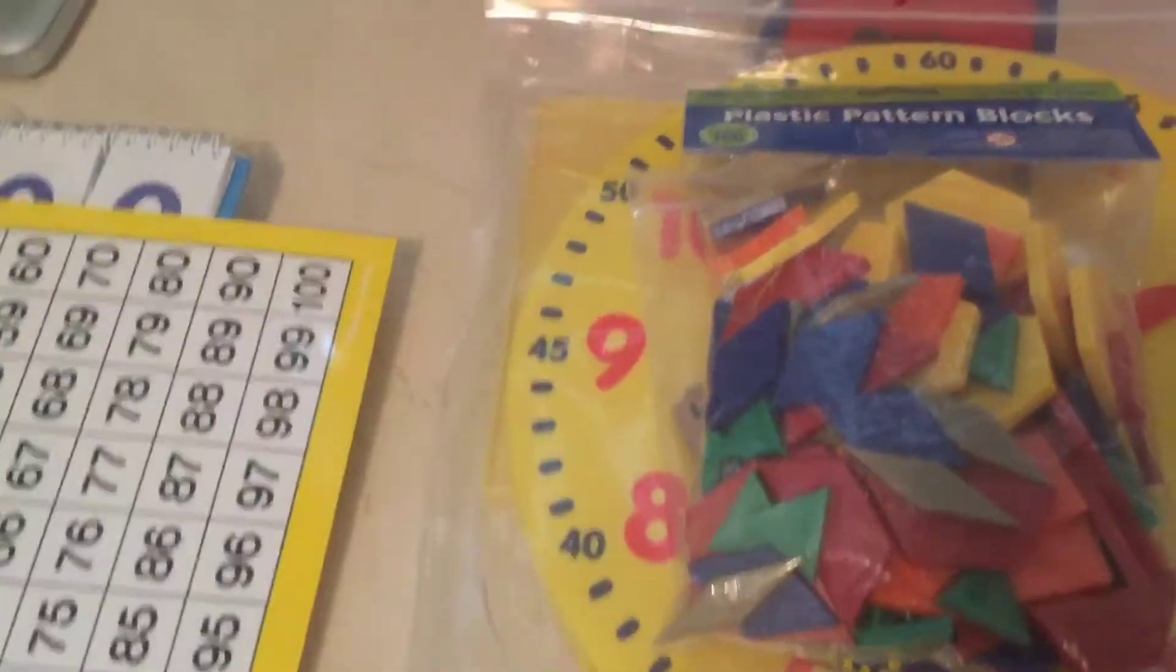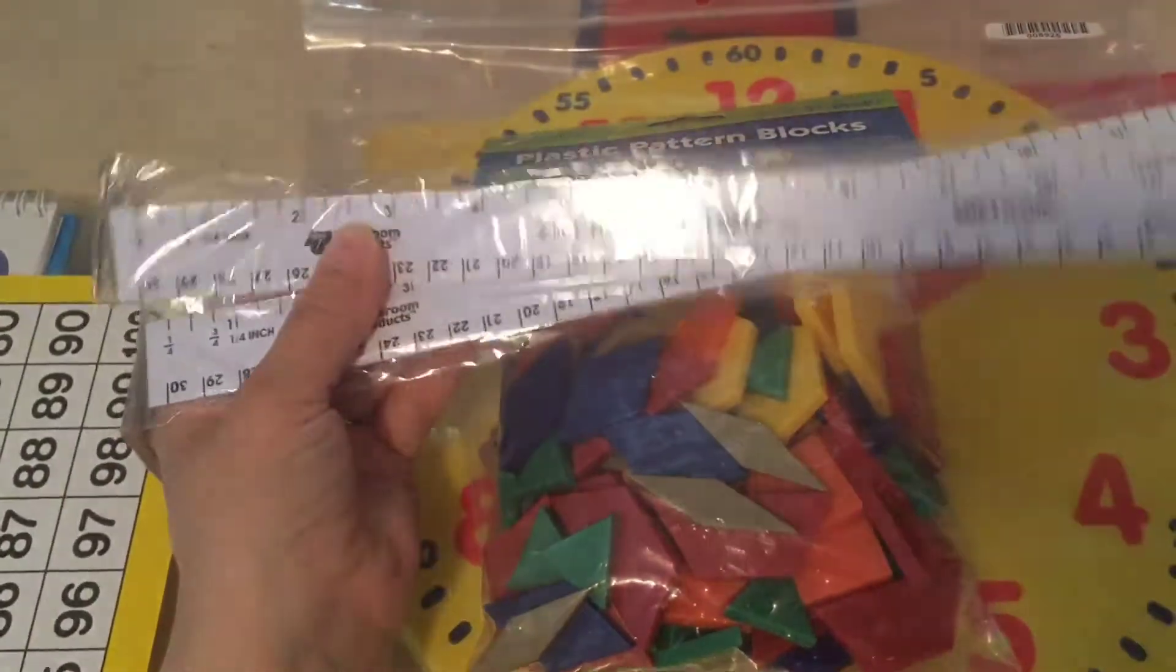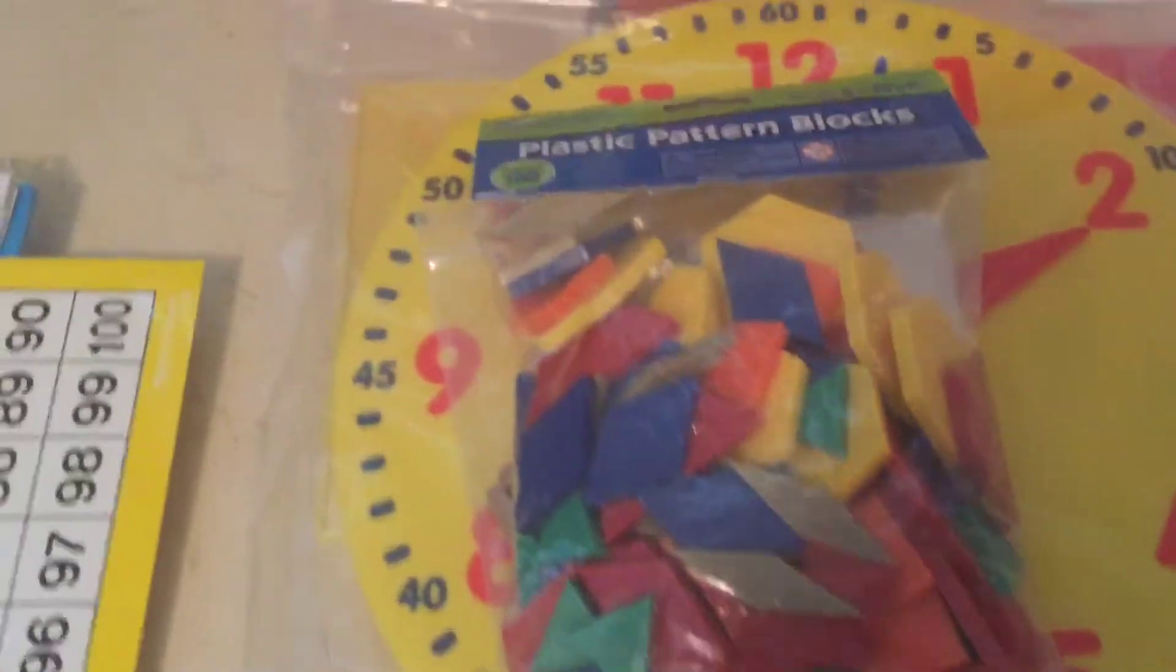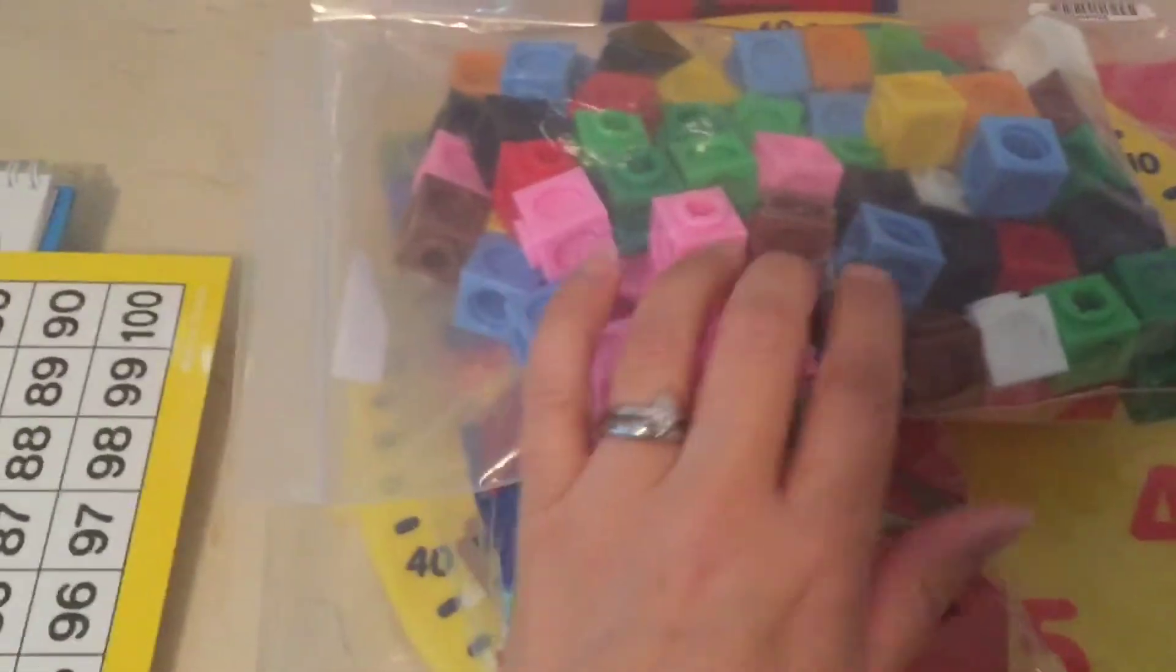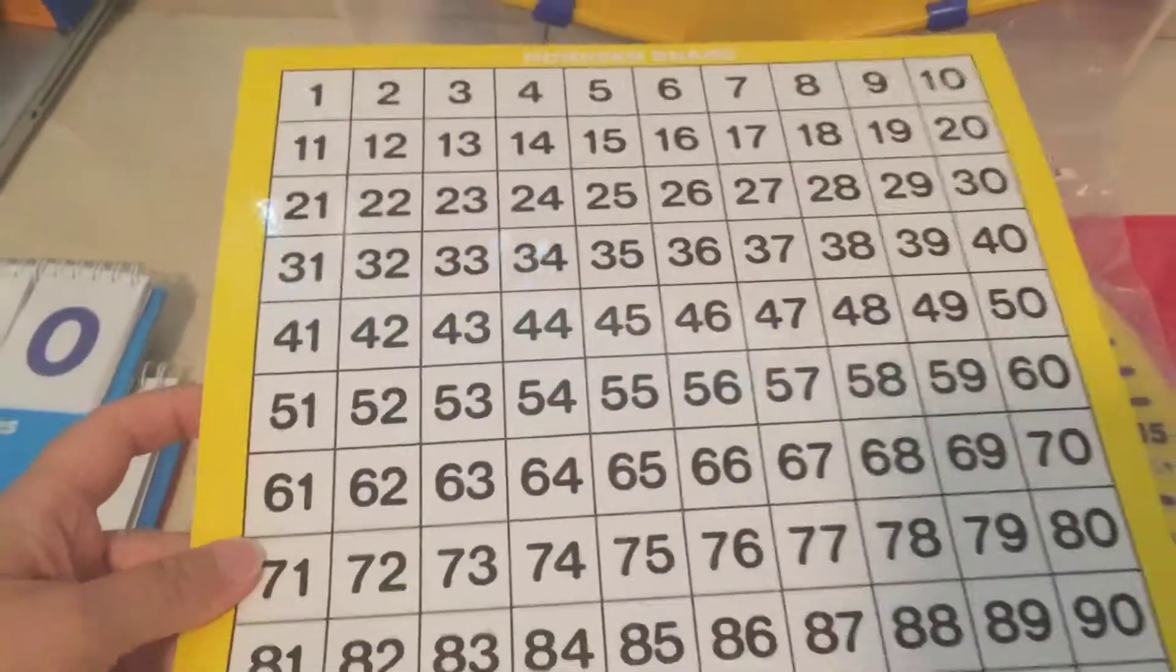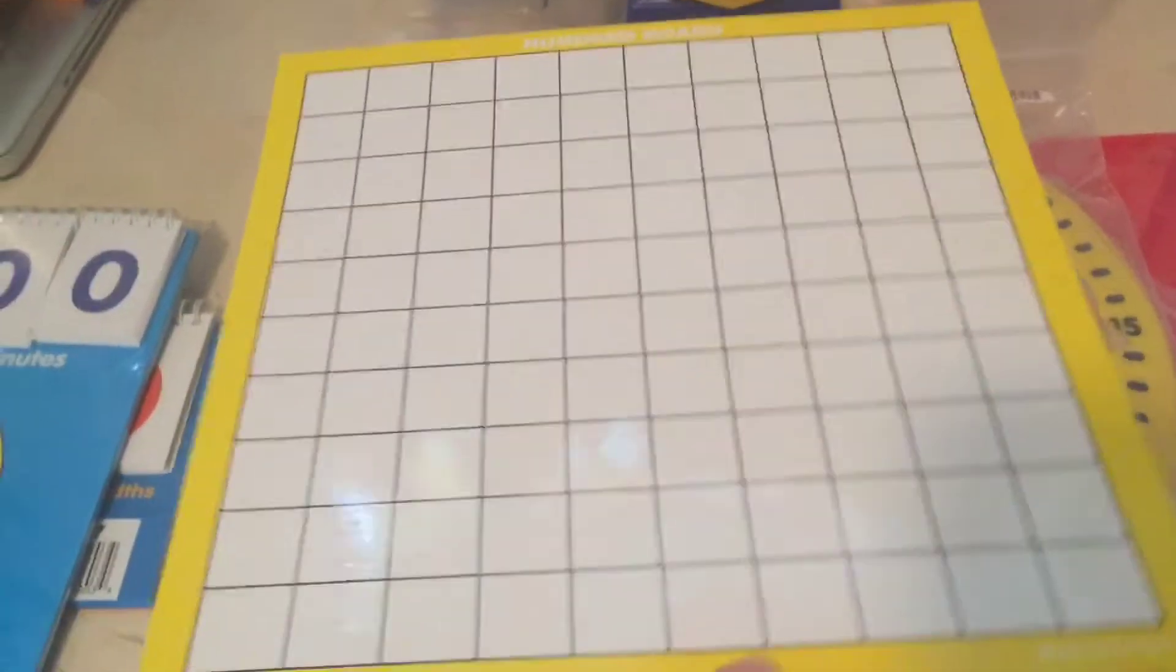You get a large 100 shape package of the pattern blocks. You get two plastic rulers and they're pretty good quality, they're hard plastic. You get a bag of these interlocking cubes.